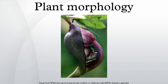Plant morphology represents a study of the development, form, and structure of plants, and by implication an attempt to interpret these on the basis of similarity of plan and origin. There are four major areas of investigation in plant morphology, and each overlaps with another field of the biological sciences.